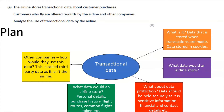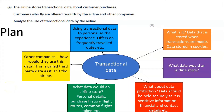The question specifically mentions 'other companies,' so think about third parties — how would they use this data? This is called third-party data because it isn't used by the airline itself; it's used by companies that want to market to customers. Think about hotels, car hire, and other companies that may want to sell something. Then consider using transactional data to personalize the experience.